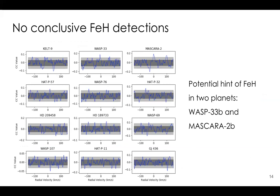In all 12 planets we found no conclusive iron hydride detections. These 1D cross-correlation functions show all observations shifted into the planet's rest frame and co-added — you'd expect a positive peak around 0 km/s. There are no strong peaks in any of them. Two potential tentative peaks around 0 km/s exist but are not statistically significant, and those two planets could be future targets.